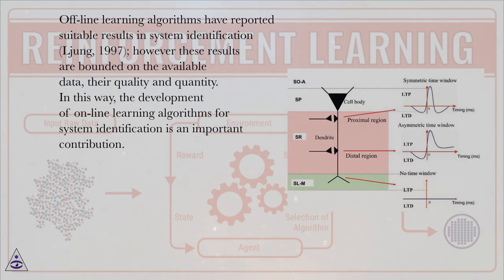Offline learning algorithms have reported suitable results in system identification (Jung, 1997). However, these results are bounded on the available data, their quality and quantity. In this way, the development of online learning algorithms for system identification is an important contribution.